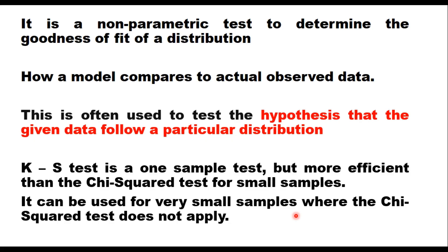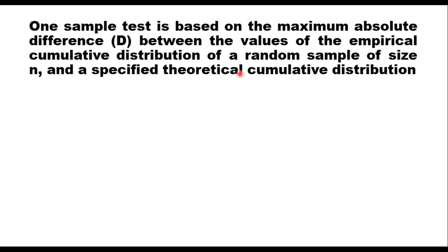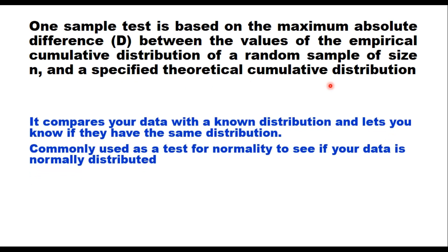The test statistic is independent of the expected frequency distribution — it only depends upon the sample size. The one-sample test is based on the maximum absolute difference between the values of the empirical cumulative distribution of a random sample of size n and a specified theoretical cumulative distribution. It compares your data with a known distribution and lets you know if they have the same distribution, and is commonly used as a test for normality to see if your data is normally distributed.